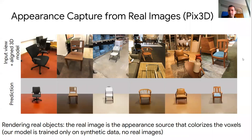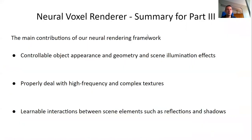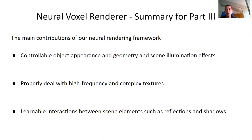To summarize part three: the neural voxel renderer enables control over object appearance, geometry, and scene illumination effects. It properly deals with high-frequency complex textures and has implicit learnable interactions between reflections and shadows. Current limitation: it works only with one object and ground — we haven't tried more complex scenes. Thank you for your attention, I'll take questions.